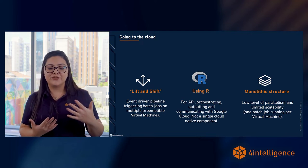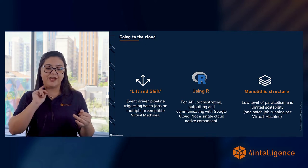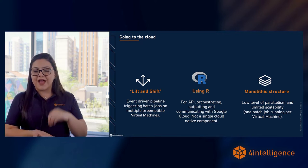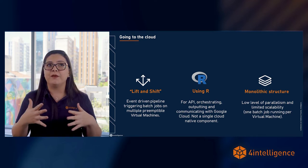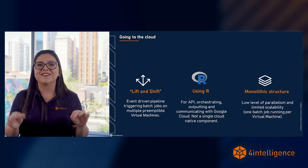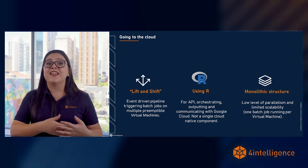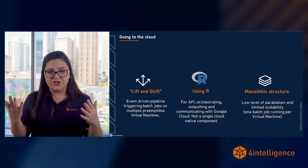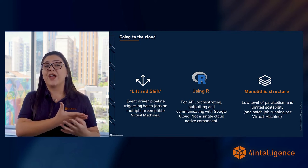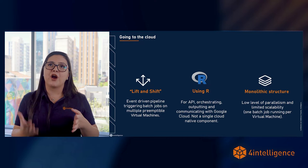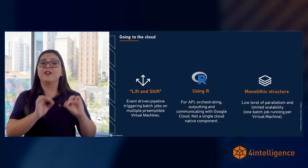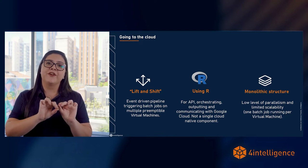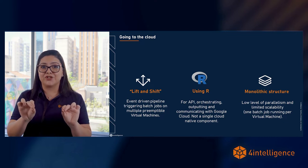We used R for API orchestration, outputting, and communicating with Google Cloud. Even our front end was developed in R. We also had a monolithic structure — a very classic case for us was running 97 time series. When a request came via API, we would run things in batch: send those 97 jobs to one virtual machine, and we had four at the time. We had big problems with queues, but going from running locally to the cloud was still a great improvement — until we started having new problems with things getting too big for this R-based structure.